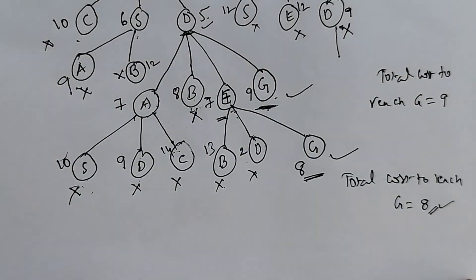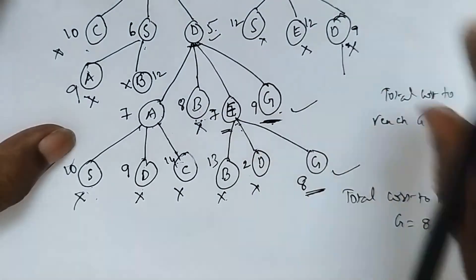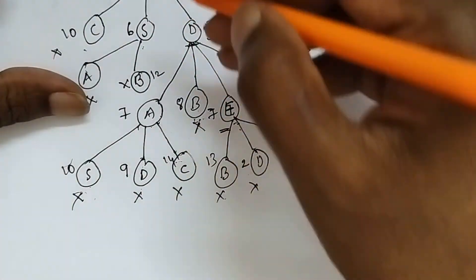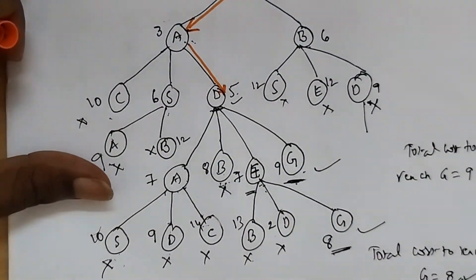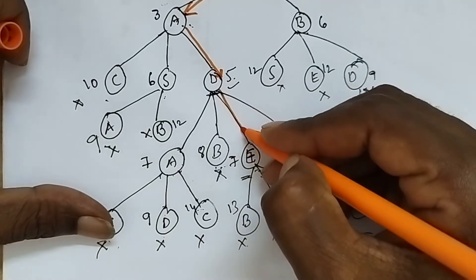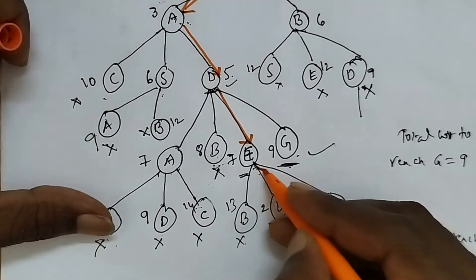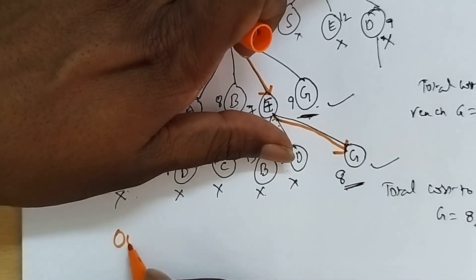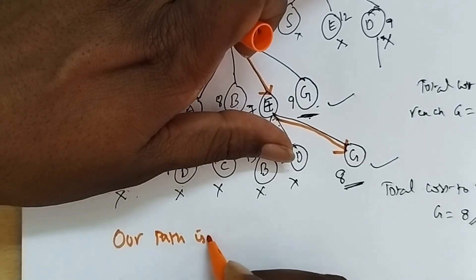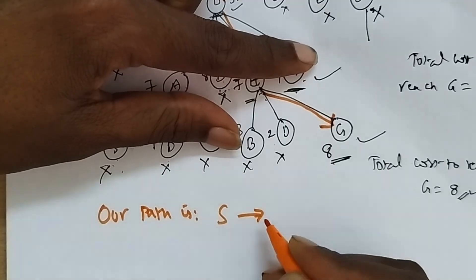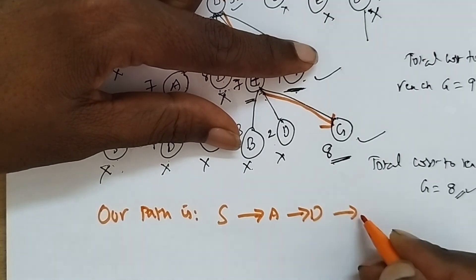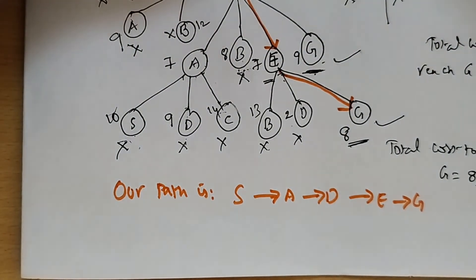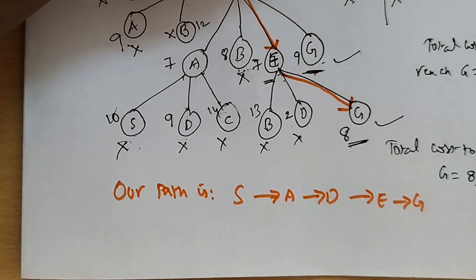When all the leaf node weights are greater than or equal to the current cost total, we stop the process. The optimal path is S to A to D to E to G, with a total cost of 8.